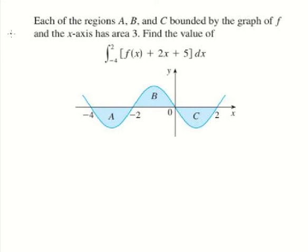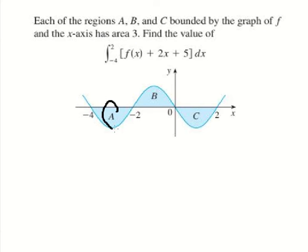Hello everybody. Today I want to show you how to answer this. We know that the values of a, b, and c are about negative three, positive three, and negative three, because this is about the area. So a is about negative number three in the integral, b is positive, and c is about negative number three.